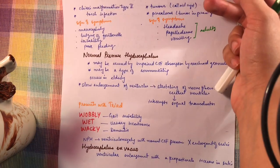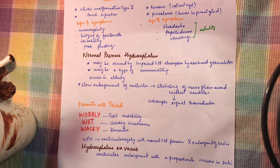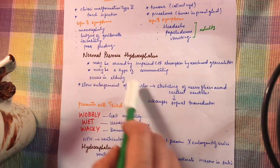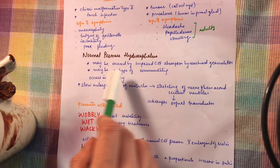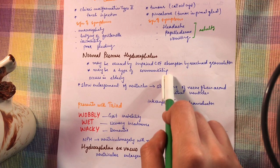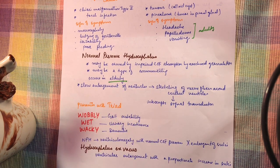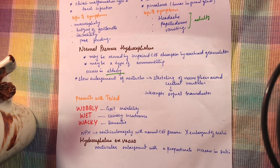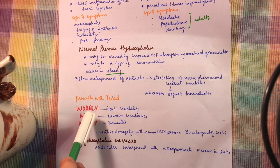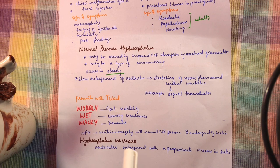One more important condition is normal pressure hydrocephalus (NPH). As the name implies, the intracranial pressure is within the normal range. It may be caused by impaired CSF absorption by the arachnoid granulations, possibly a type of communicating hydrocephalus. It occurs in elderly patients. There is slow enlargement of the ventricles causing stretching of nerve fibers. The mnemonic is 'Wobbly Wet Wacky': wobbly means the patient presents with a wide-based magnetic gait — gait instability.